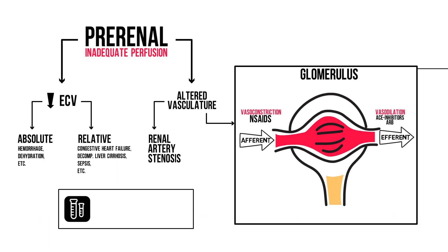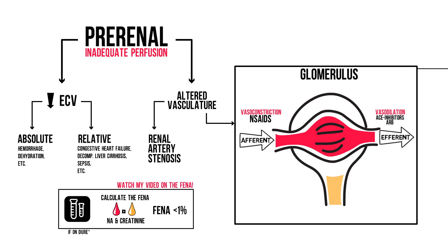The most helpful lab work is a urine sample for sodium and creatinine — note that you also need these in serum. Calculate the fractional excretion of sodium to see if the kidney is trying to retain sodium and still able to retain sodium. If the fractional excretion is less than 1%, you're dealing with pre-renal kidney injury. If your patient is on diuretics, those diuretics force sodium excretion, so calculate the fractional excretion of urea instead. Link in the description.